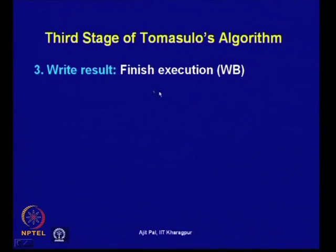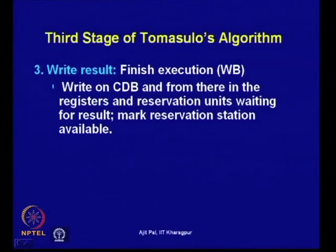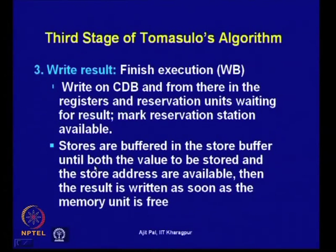The third stage is write result: finish execution, write on the CDB, and from there to registers and reservation units waiting for the result, then mark the reservation station available. Writing is done by floating the data on the common data bus, which goes to the appropriate registers as well as reservation stations waiting for the data. For stores, they are buffered until both the value and address are available, then written to memory when the memory unit is free.